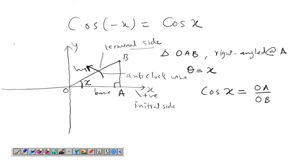The terminal side OB, the length of the hypotenuse or the length of the terminal side, is every time positive. So we take OB every time positive. What changes is the sign of base and perpendicular because of the quadrants we are talking about.